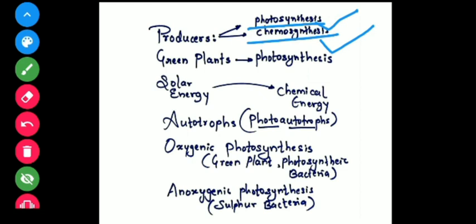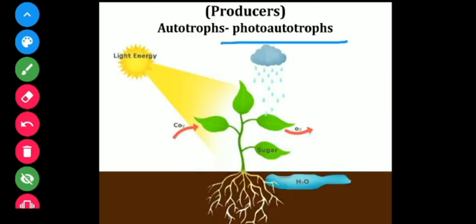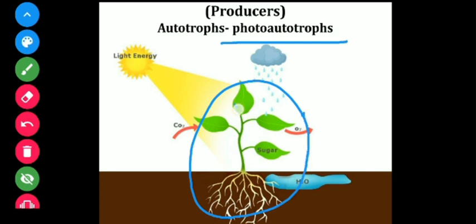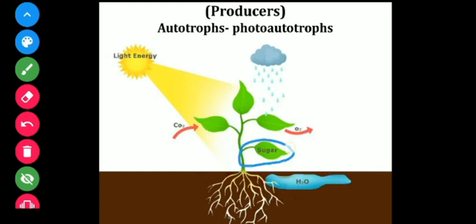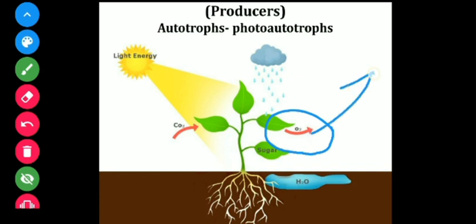Here you can see how the producers or photo-autotrophs prepare their food. The plant, being green, has chlorophyll pigment which traps sunlight, and this light energy gets converted into sugar — the chemical form of energy. For photosynthesis, plants require carbon dioxide gas, water, and sunlight, and ultimately prepare sugar or carbohydrate while releasing oxygen as a byproduct.